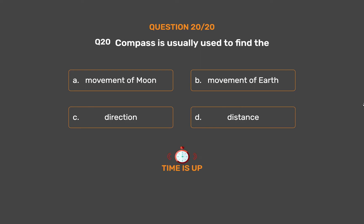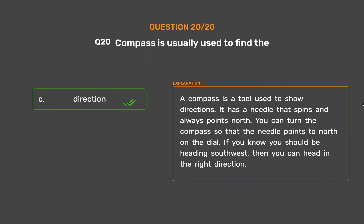The correct answer is Option C: Direction. A compass is a tool used to show directions. It has a needle that spins and always points north. You can turn the compass so that the needle points to north on the dial, and if you know you should be heading southwest, then you can head in the right direction.